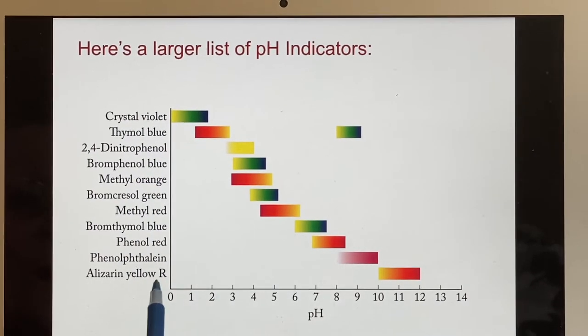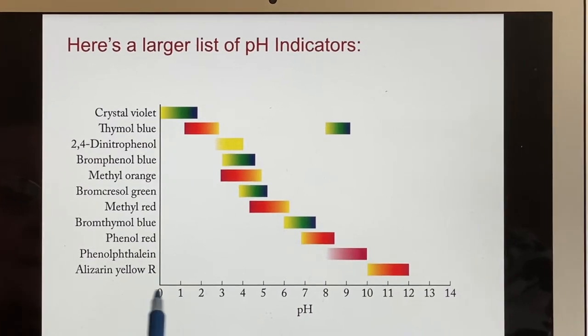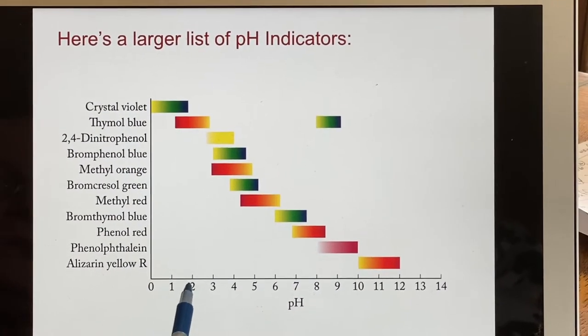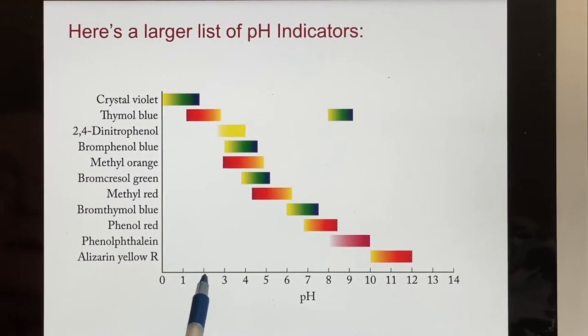Here's crystal violet. It's only good at very, very acidic things, to tell you the difference between something that's crazy acidic and just terribly acidic.